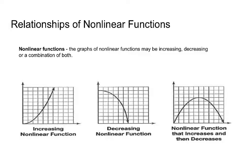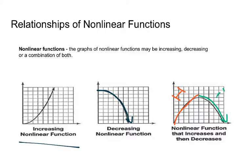The other type of relationships are relationships of non-linear functions. Non-linear means they're not a straight line, but they can still be functions and have a relationship. There are three ways to describe non-linear functions. Some will start on the left-hand side and swoop upward — those are increasing non-linear functions. Some will start on the left-hand side and go down — those are decreasing non-linear functions. The other relationship is a combination: it increases for a while and then decreases. You're going to have to describe when and how that happens.